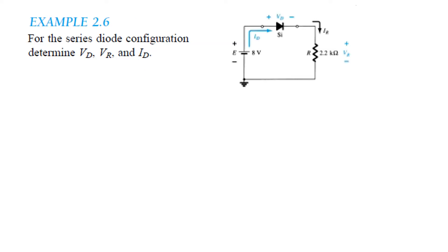Now let's do example 2.6. We have an 8 volt battery, a silicon diode in forward bias with positive touching positive of the diode, and a 2.2K resistor. We have to find three things: the voltage across the diode, the voltage across the resistance, and the current through the diode or through the resistance — ID is equal to IR.